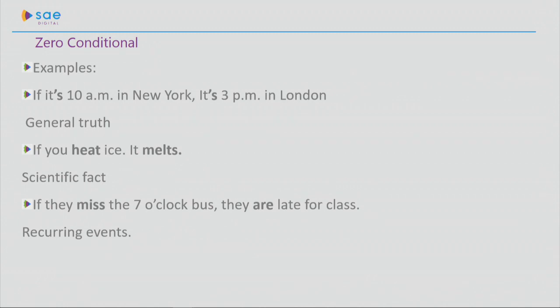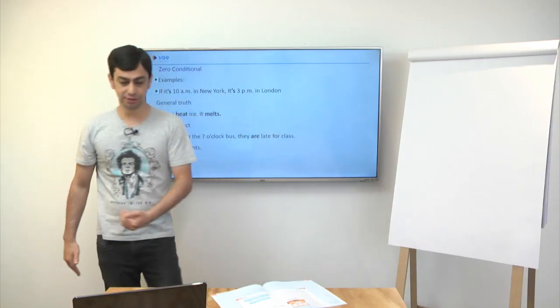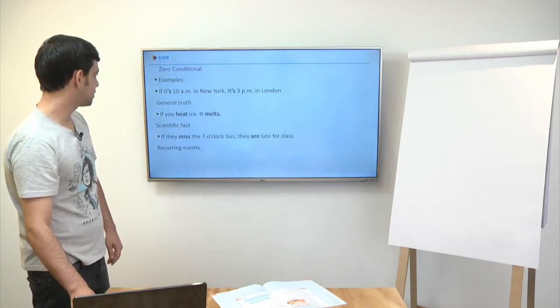What is this? A scientific fact. 100% of the times this happens, the result will be the same. If they miss the 7 o'clock bus, they are late for class. If they miss the bus at 7 a.m., they are late for class. What is this? A recurring event. Every time they miss the 7 a.m. bus, they will arrive late to class. So, an example of each of the 3 uses.